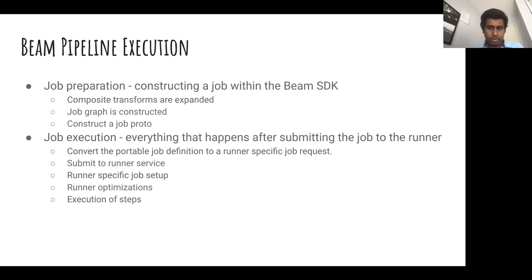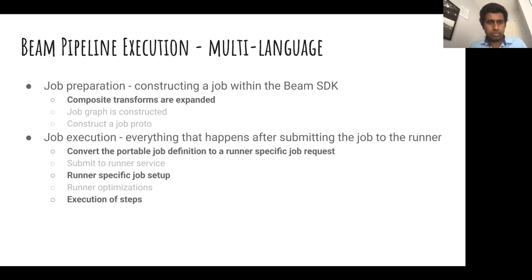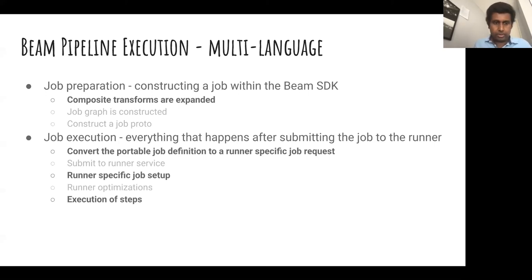Which of these stages is different for multi-language pipelines? The bolded items are what changes. Composites need to be expanded, but with multi-language some composites might not be defined locally — for example, a Python pipeline using a Java composite. You need some way to expand composites defined in other SDKs. After job submission, when converting the portable definition to a runner-specific request, the runner might handle things differently if multiple environments are involved.